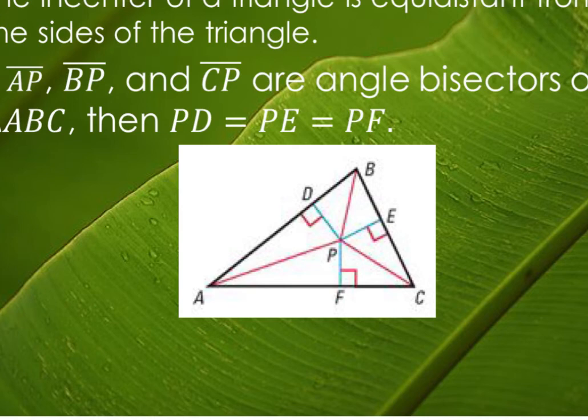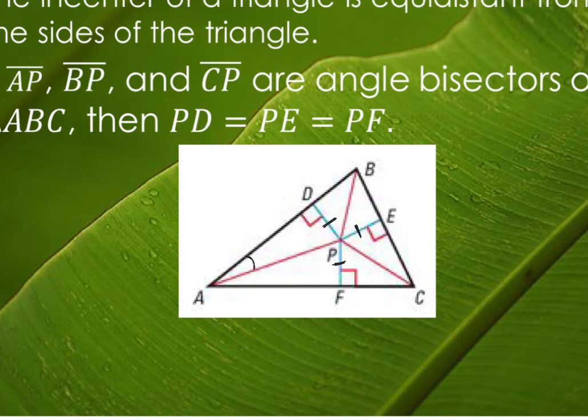In this case, we don't know if AP, BP, or PC are congruent to each other. But what we do know is that those three blue line segments are all equal to each other. If AP is an angle bisector, then angle DAP is congruent to angle PAF — those two are congruent.